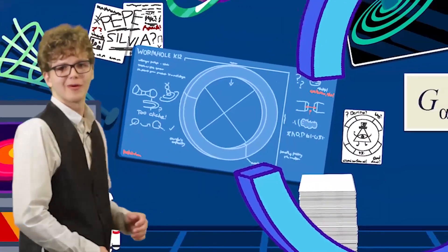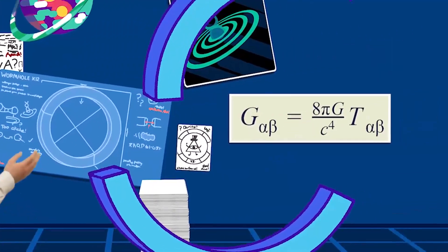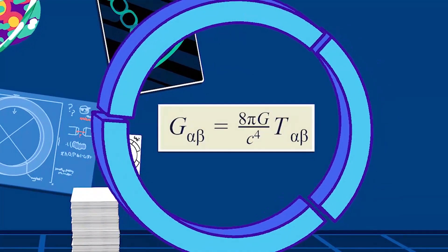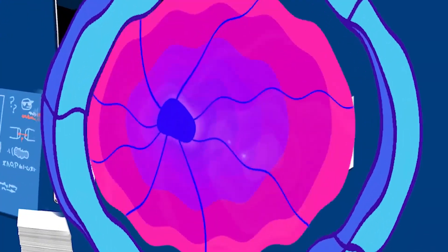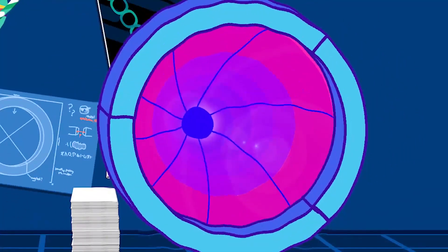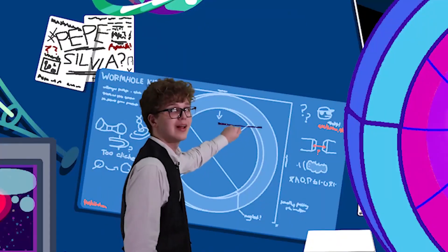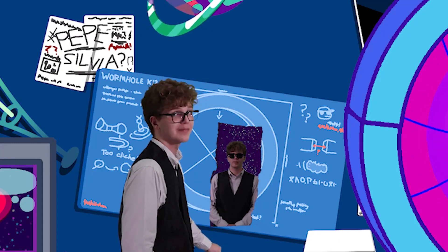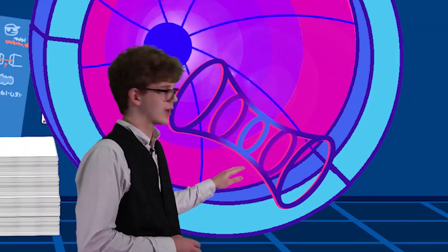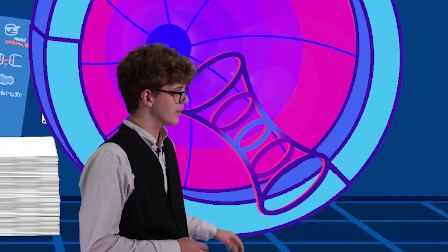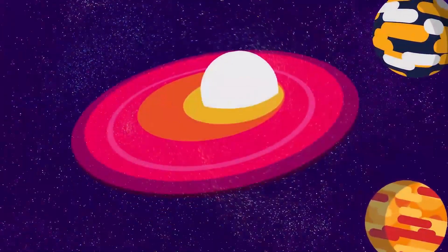Let's begin by constructing our wormholes. Wormholes are a theoretical tear in space-time, their structure resembling a tunnel connecting two separate points in space-time. The wormhole we are constructing is known as a traversable wormhole.